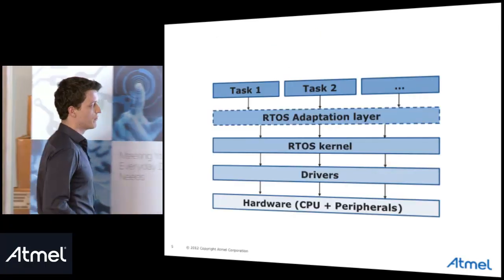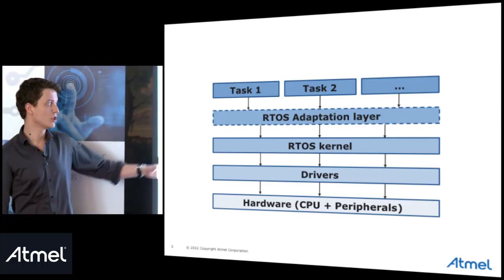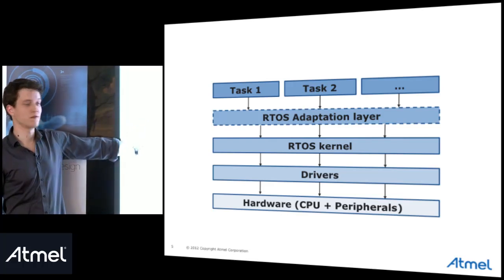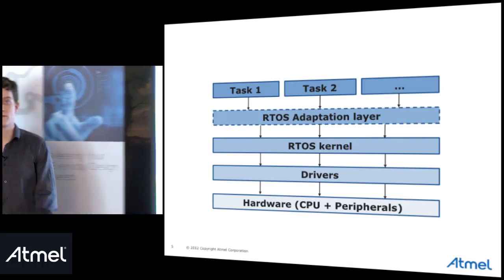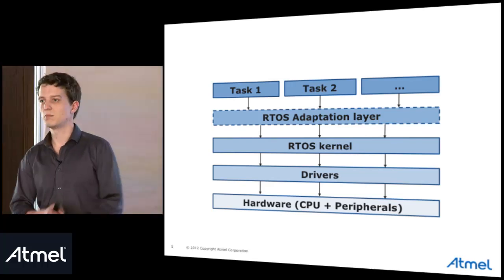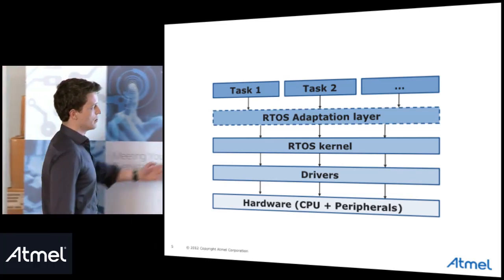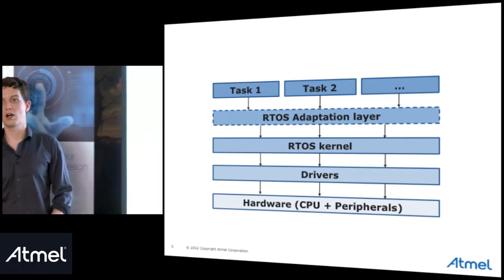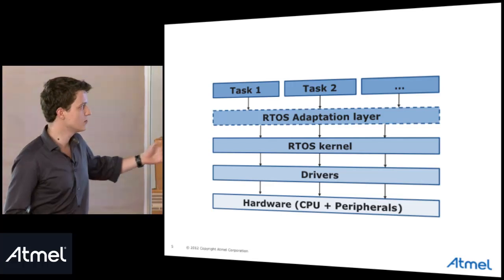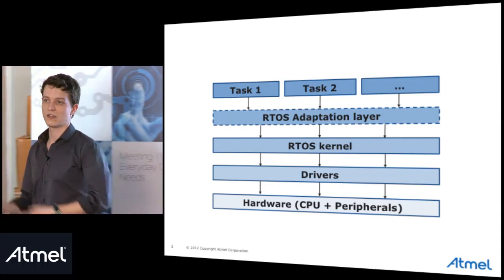At the software level, an RTOS is usually divided into two layers. These layers sit just above the standard MCU drivers that you can find in ASF — for example SPI drivers or other standard drivers. Then you have the RTOS kernel, which embeds all the task management, and the RTOS adaptation layer that allows the application to use different tasks.